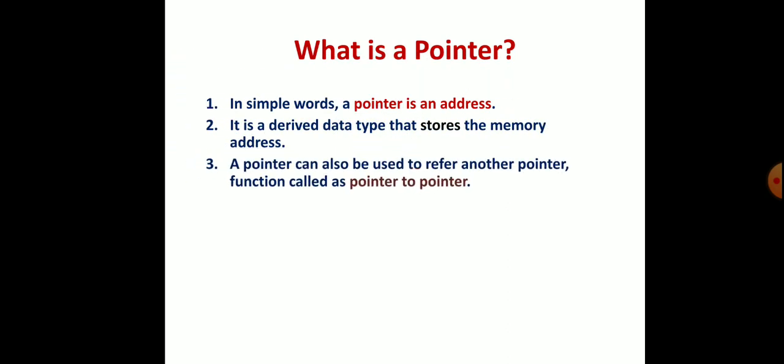A pointer can also be used to refer to another pointer, which is called pointer to pointer. For example, if your house address is in a particular state, you want to specify the country also, so that is pointer to pointer - address to the address. Another example: if some institute is there, and opposite to the institute there is some gym or indoor stadium, the particular address resembles another address. That is a pointer to pointer.